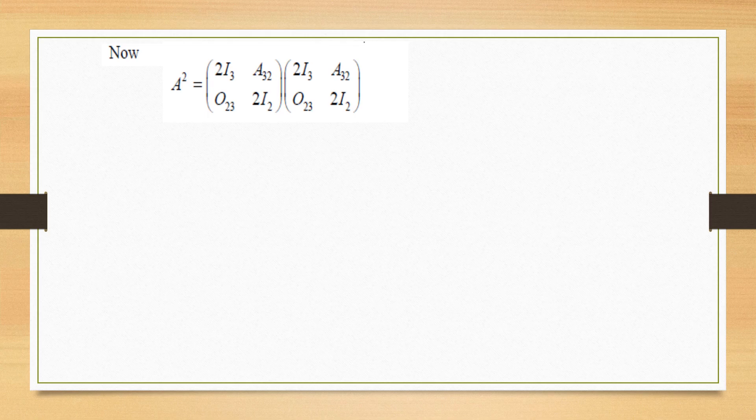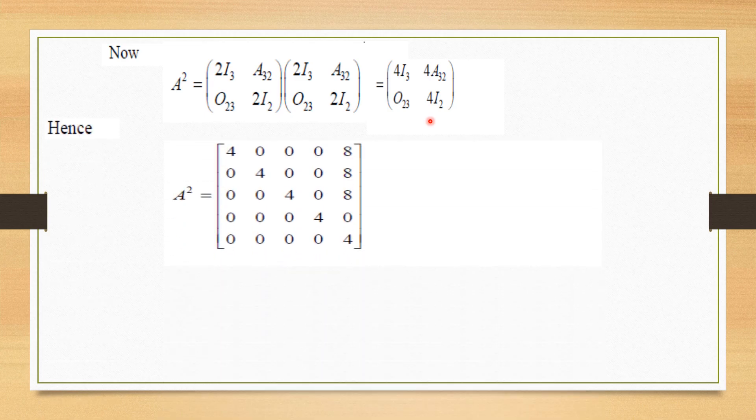It is very easy to evaluate A square and A square is equal to a 2 by 2 matrix. Now we can calculate 4I cube, 4A32, O23 and 4I2 easily and replace in these 4 different places. We obtain A square.